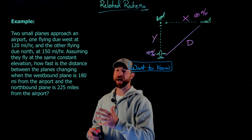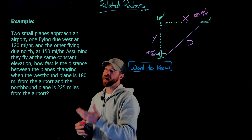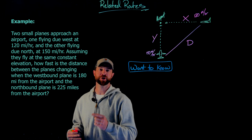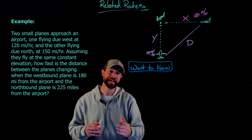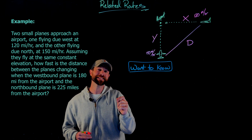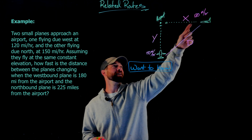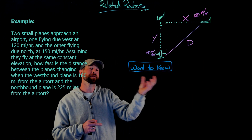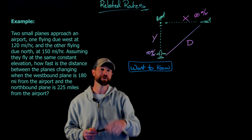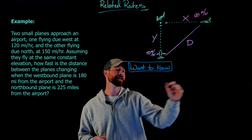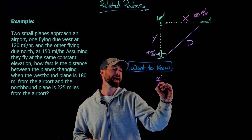The next thing I always do is extract what they're asking me to figure out. In this case, they're asking me for how the distance between the planes is changing. Importantly, they're not asking me just to find the distance, but the rate of change of the distance. The first thing I think about is what would the units be — since the planes' speeds are in miles per hour, this rate of change must also be in miles per hour.